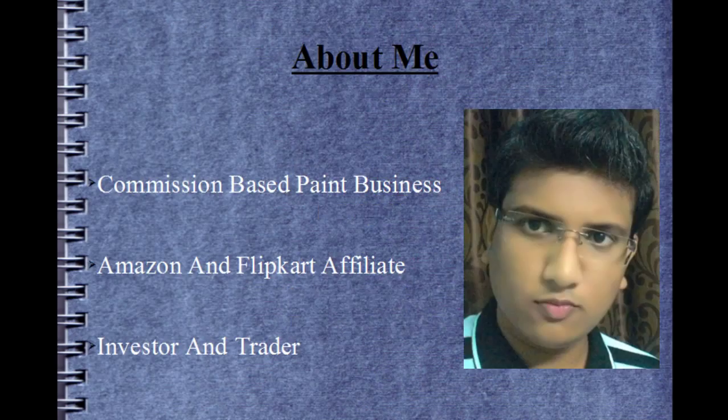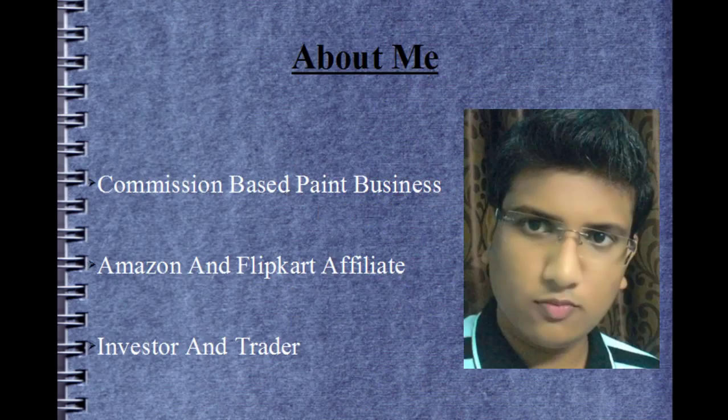For starters, I own a commission-based paint business. I am also affiliated with Amazon and Flipkart. In short, I send customers to buy products from their websites and they pay me 2–10% commission from their profit. My business model is simple: provide information for free, then ask people to buy things they already want to buy and get commission on it.